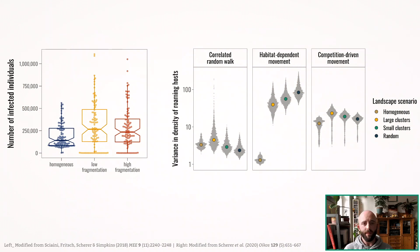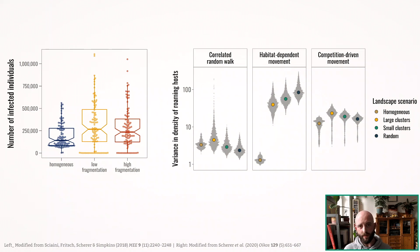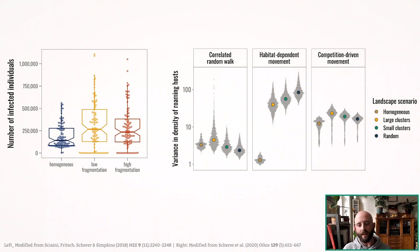Beeswarm plots are a nice way to highlight these differences while keeping the information of the raw data. I'm a big fan of these plots and used them back in my PhD defense. On the left, this is a plot we published using the beeswarm–box plot combination to show summary statistics and highlight the high number of zero-infected individuals. On the right, I colored the median with a very bright color but still added a grayish beeswarm in the back to show these interesting simulation results.